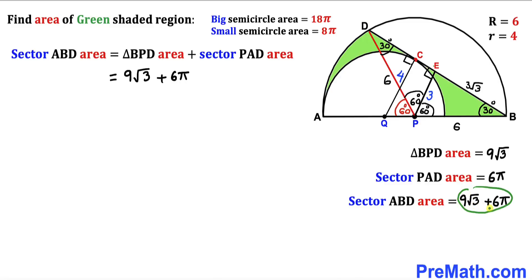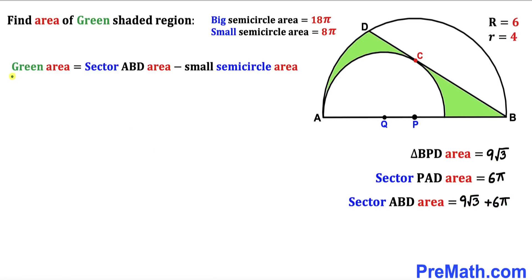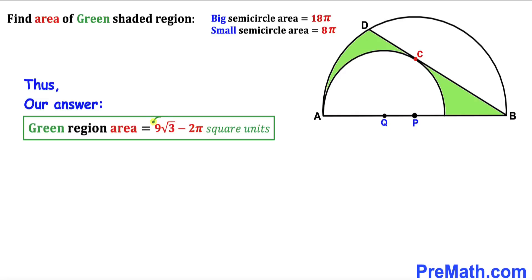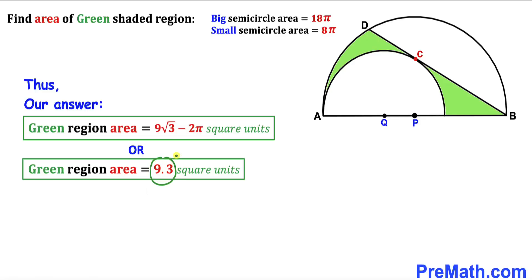For the final step, the green area equals the sector ABD area minus the small semicircle area: 9√3 plus 6π minus 8π. Combining like terms, the green area equals 9√3 minus 2π, which is approximately equal to 9.3. Thanks for watching and please don't forget to subscribe to the channel for more exciting videos.